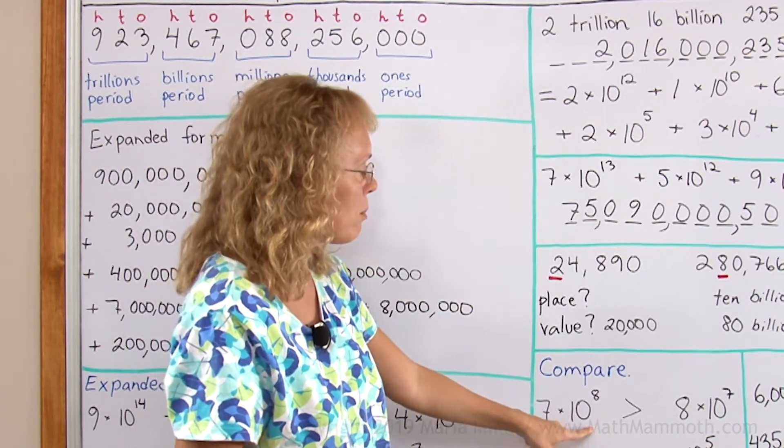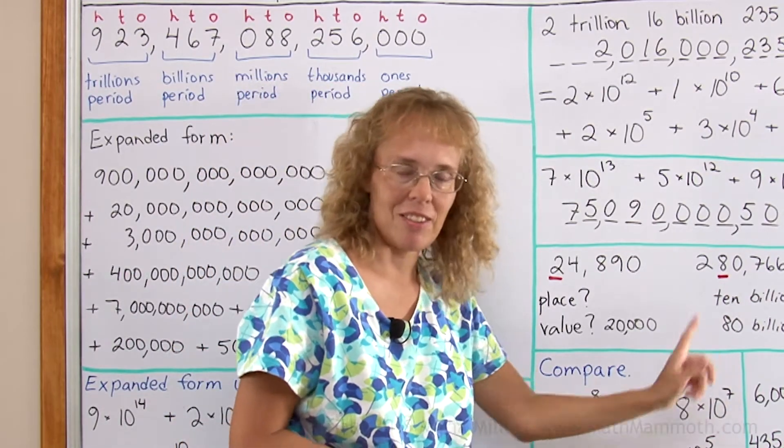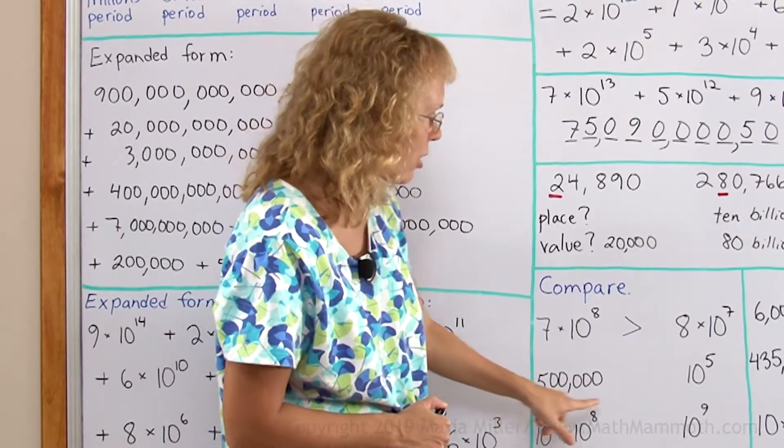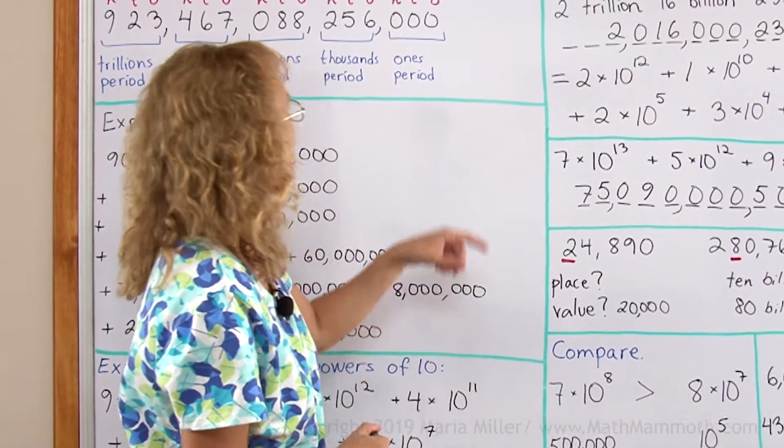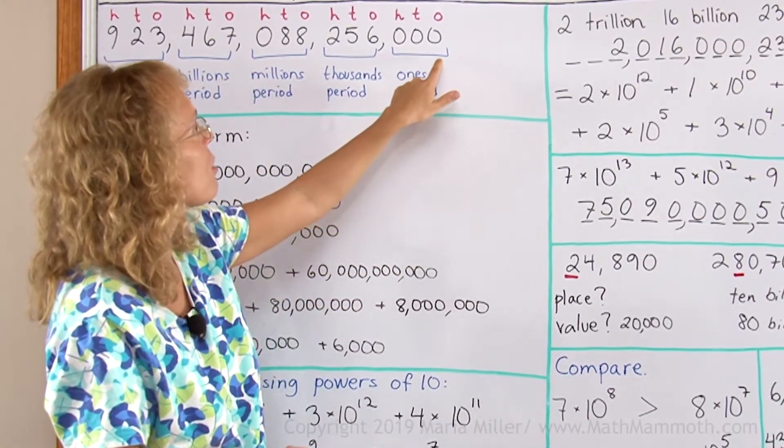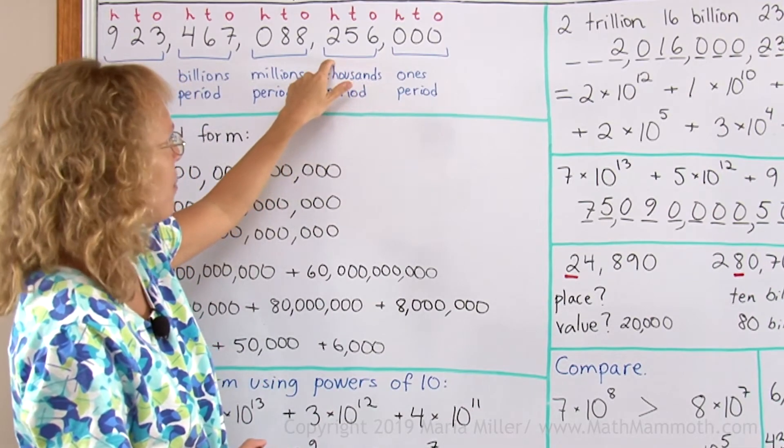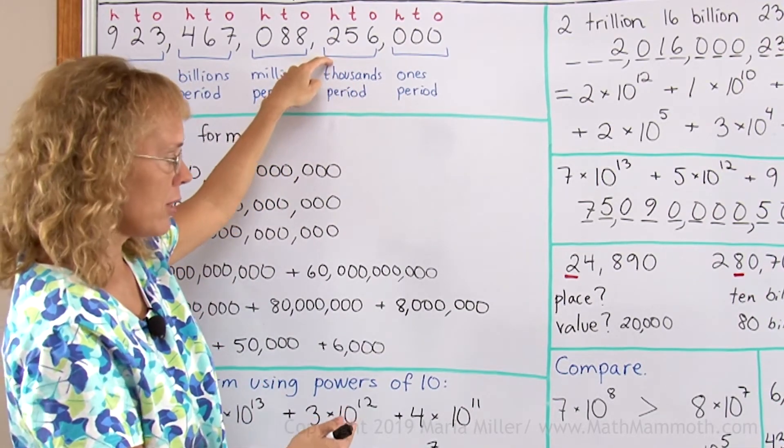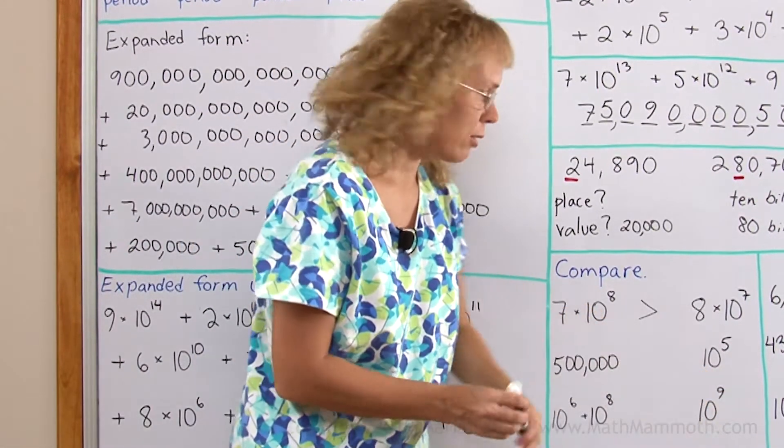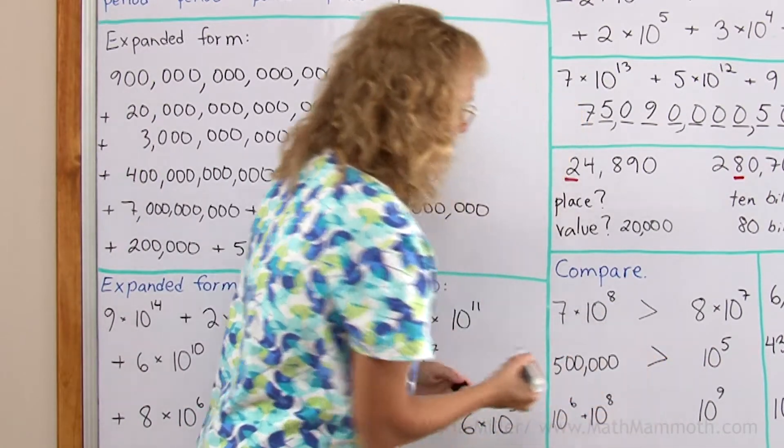10 to the 8th is even more than 9 times 10 to the 7th, actually. 500,000 or 10 to the 5th? 10 to the 5th—okay, I'll count my 5 zeros from here. 5 zeros, and then there would be 1 here. So it's 100,000. This here is 100,000, so it's less than 500,000.